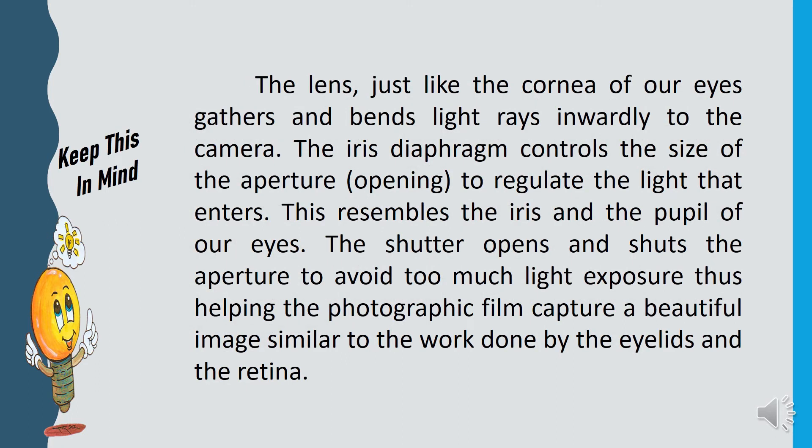The lens, just like the cornea of our eyes, gathers and bends light rays inwardly to the camera. The iris diaphragm controls the size of the aperture to regulate the light that enters. This resembles the iris and the pupil of our eyes. The shutter opens and shuts the aperture to avoid too much light exposure. Thus, helping the photographic film capture a beautiful image similar to the work done by the eye lens and the retina.